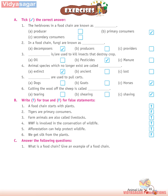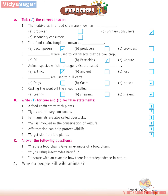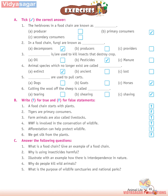Exercises C — Answer the following questions: 1. What is a food chain? Give an example. 2. Why is using insecticides harmful? 3. Illustrate with an example how there is interdependence in nature. 4. Why do people kill wild animals? 5. What is the purpose of wildlife sanctuaries and national parks? 6. How are domestic animals useful to us?